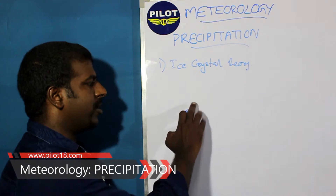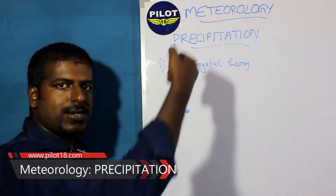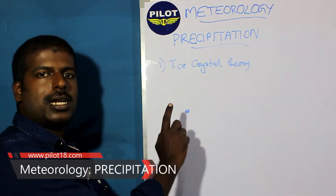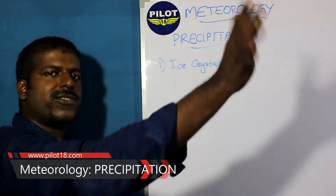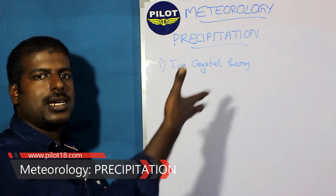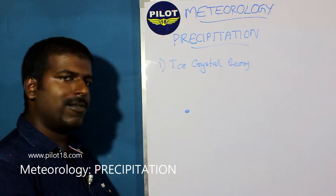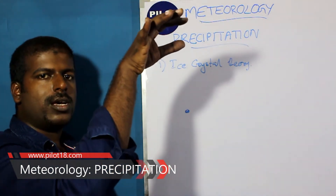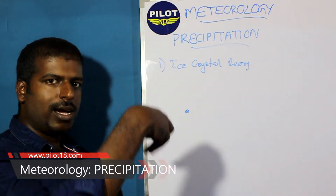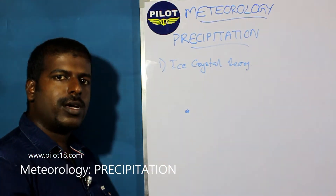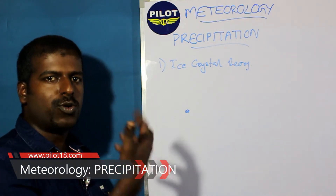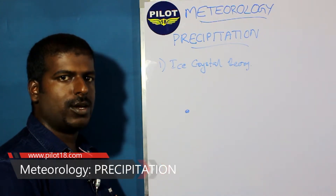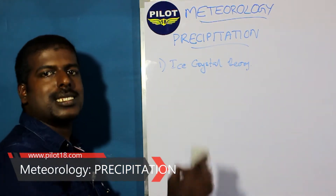Eventually the enlarged ice crystal will fall prey to gravity and shower out of the cloud. Thousands of crystals change like this and an ice shower happens. When this occurs in a high cloud, ice crystals fall, and as they approach the ground where temperature is higher, they turn to water, producing very cold water drops. This is called the ice crystal theory.